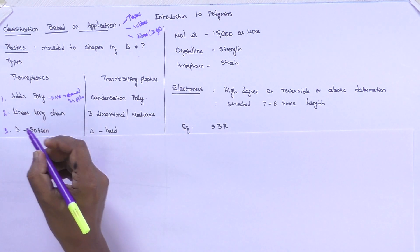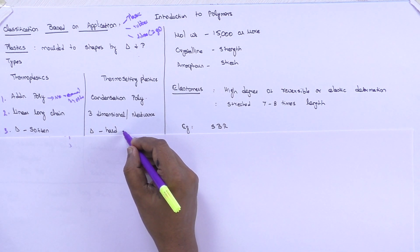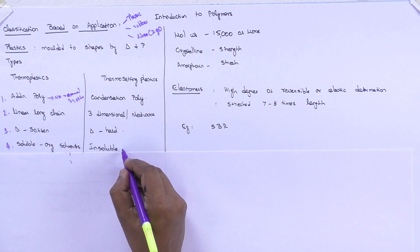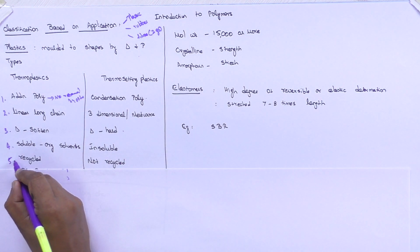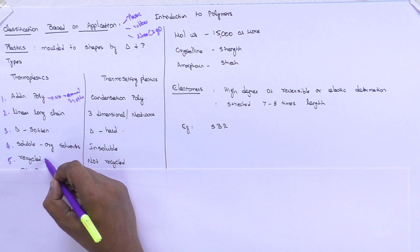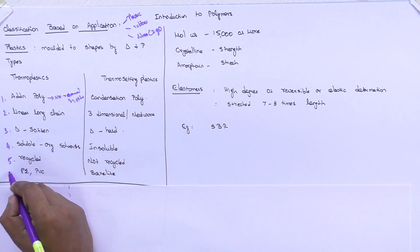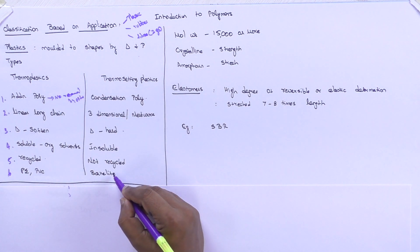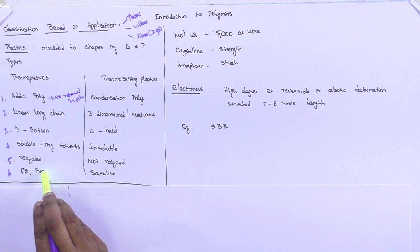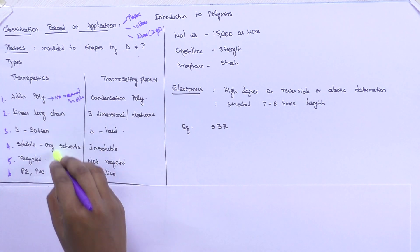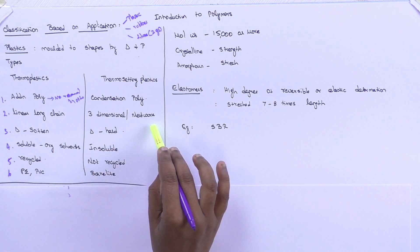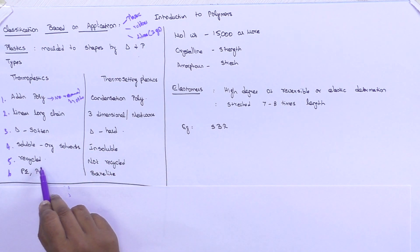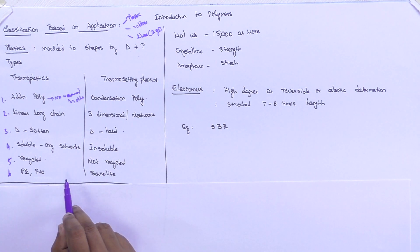On heating, thermoplastics soften, whereas thermosetting plastics are very hard and will not soften. Thermoplastics are soluble in organic solvents whereas thermosetting plastics are insoluble in organic solvents. Thermoplastics can be recycled because on heating they soften and can be remolded into any shape, whereas thermosetting plastics cannot be recycled. Examples of thermoplastics are polyethylene and PVC; for thermosetting plastics, it is bakelite.